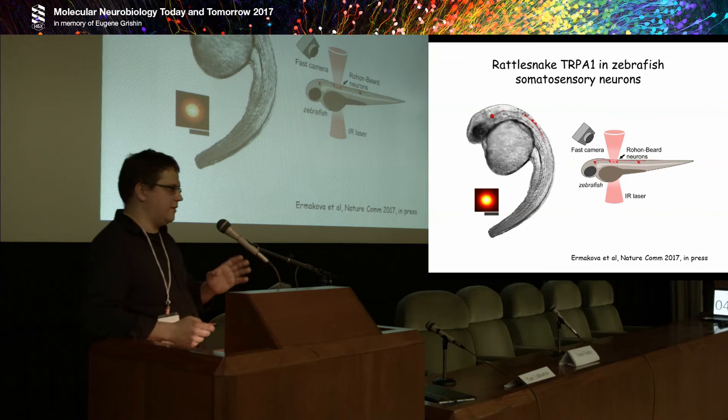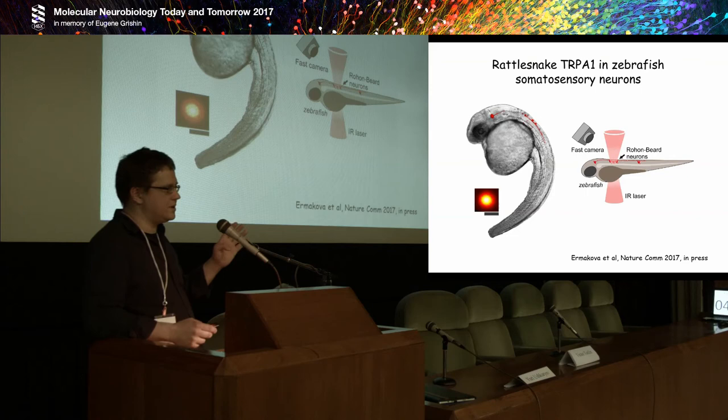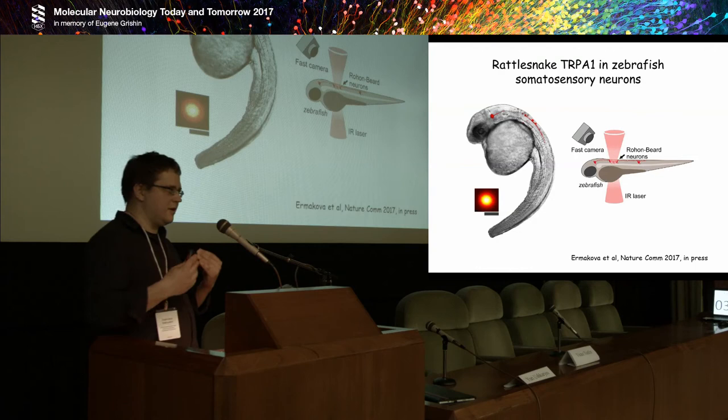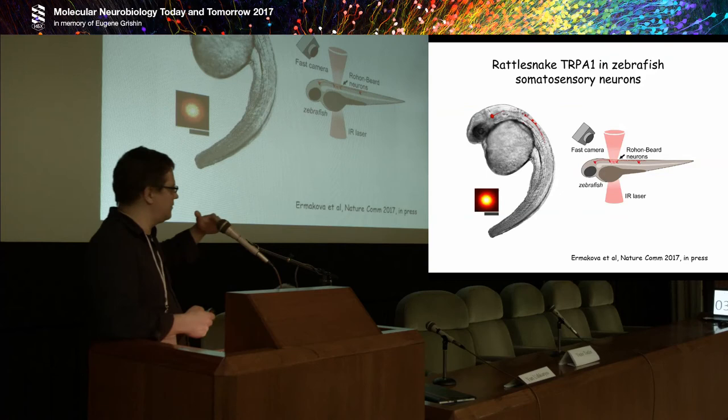Regarding the infrared wavelength: we use a range between 1,000 and 1,500 nanometers. Different wavelengths suit different setups — for cells we use one wavelength, for zebrafish another — depending on the permeability and conductivity of the system to infrared light.